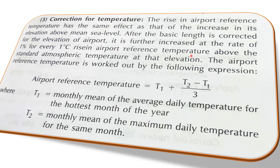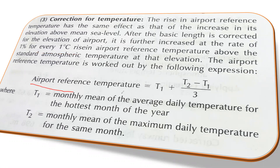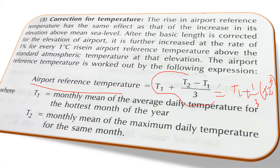The standard temperature is 15 degrees Celsius. If the airport temperature is 20 degrees Celsius, that is a rise of 5 degrees, so a 5% correction is applied. The airport reference temperature is calculated using the formula: T1 + (T2 − T1) / 3, where T1 is the monthly mean of average daily temperature for the hottest month, and T2 is the monthly mean of the maximum daily temperature for the same month.